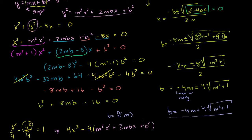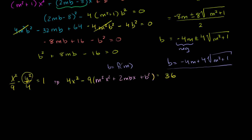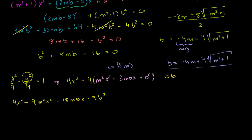And then this is going to be equal to — remember, we multiplied both sides by 36 — so this is going to be equal to 36. Let me simplify this. We know that m and b have to be such that the line will only intersect with the hyperbola at one point — it'll only have one solution to this quadratic in terms of x. But let's simplify first. So this equals 4x squared minus 9m squared x squared minus 18mbx minus 9b squared. Now let me subtract 36 from both sides, so minus 36 equals 0. This is a quadratic in terms of x.